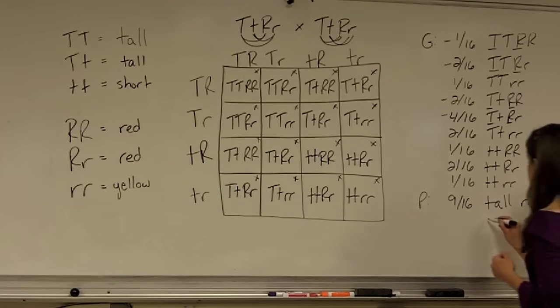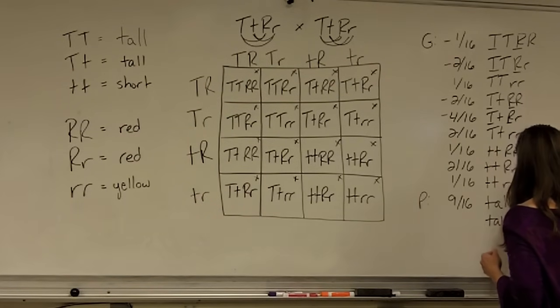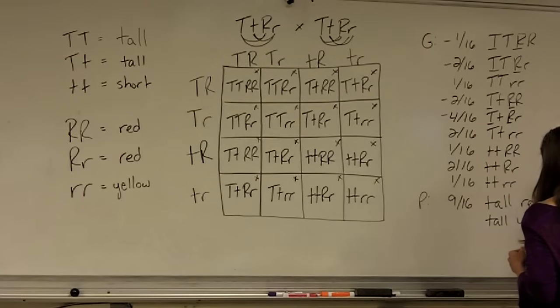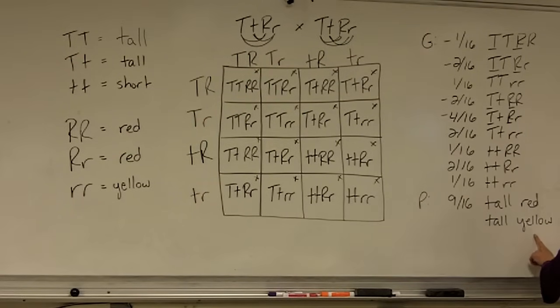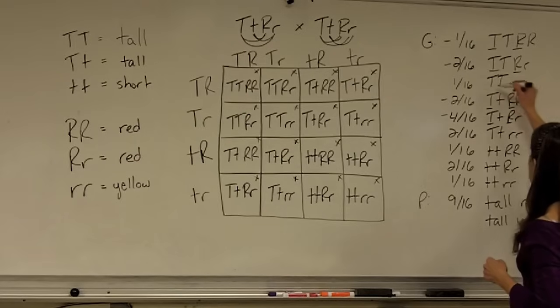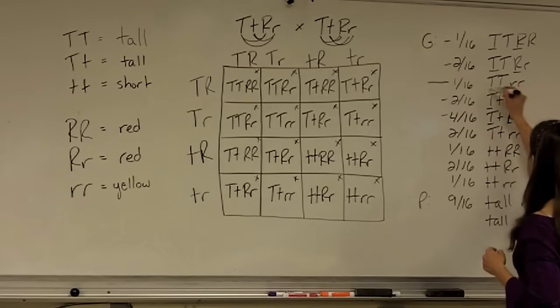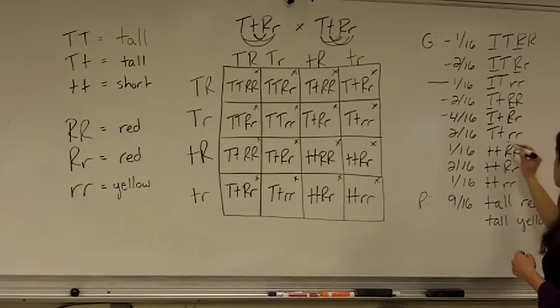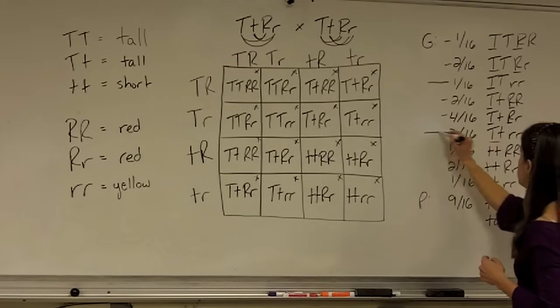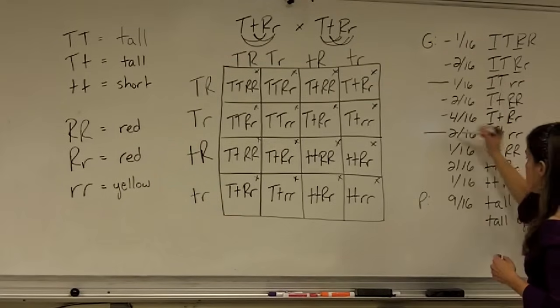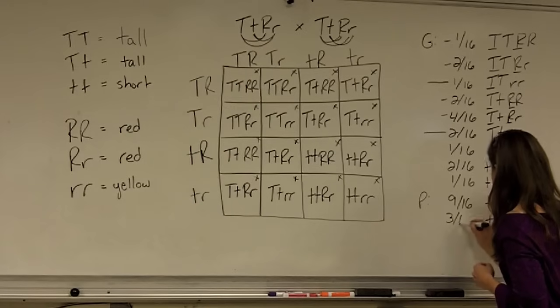The next possibility is that they could be tall and yellow, which means they're going to have a big T, but no big R. So what falls into that one? This one right here, big T, no big R. And this one right here, big T, but no big R. One and two is three sixteenths.